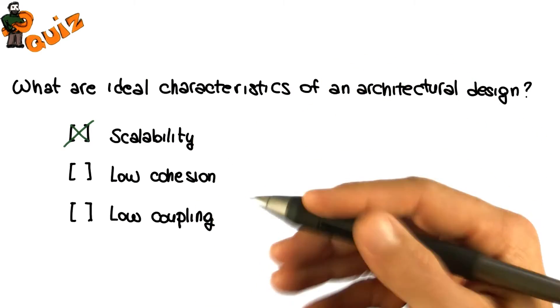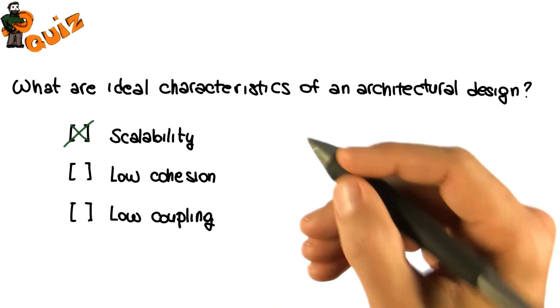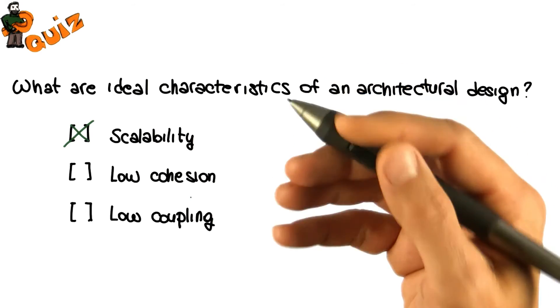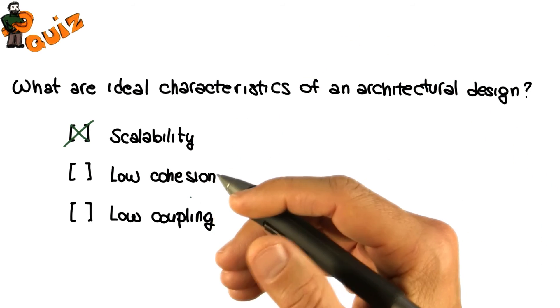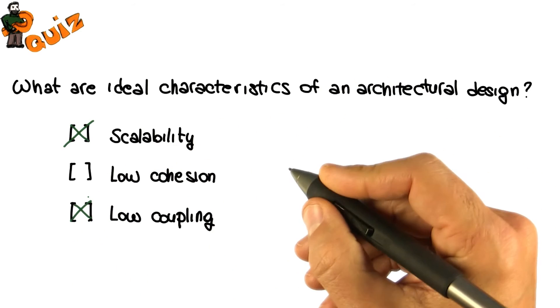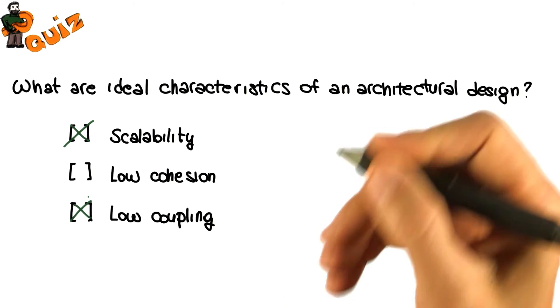As for coupling, coupling is a concept related to cohesion and is also a measure. In this case though, it is a measure of how strongly related the different modules in a system are. Low coupling, which is often correlated with high cohesion, is an important and ideal characteristic of a software architecture, as it indicates that the different modules in the system are independent from one another.